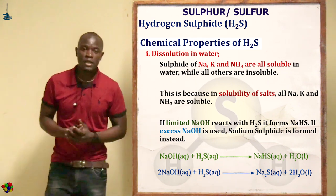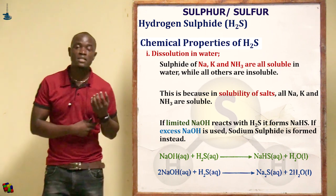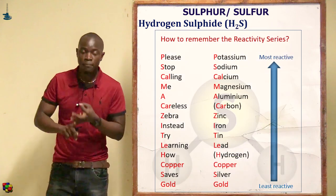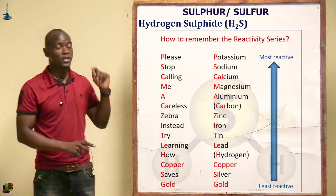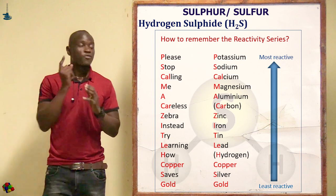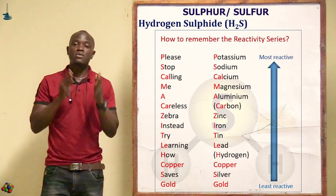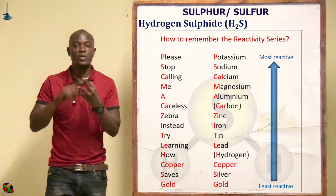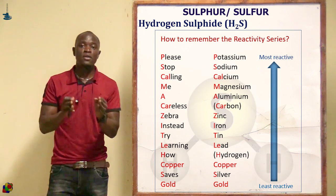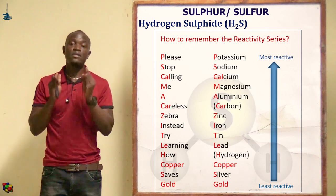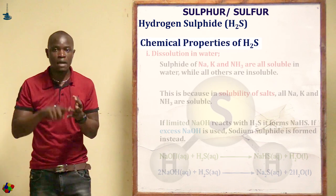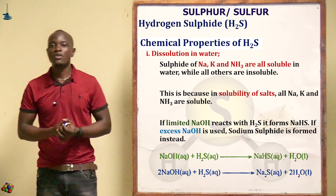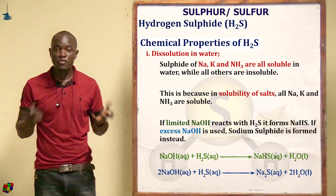This follows the solubility rules from Form 2: all salts of sodium, potassium, and ammonium are soluble. Therefore, all sulfides are insoluble except the sulfides of sodium, potassium, and ammonium, which are the only soluble ones.